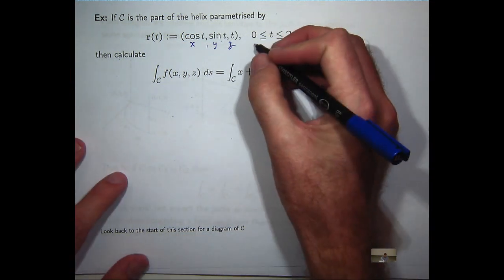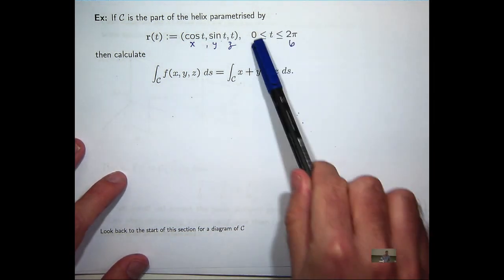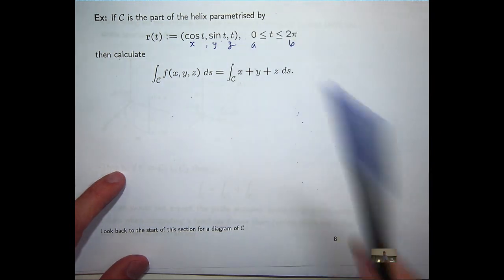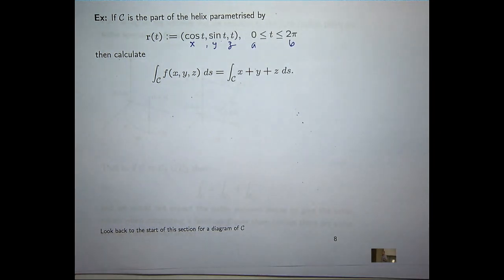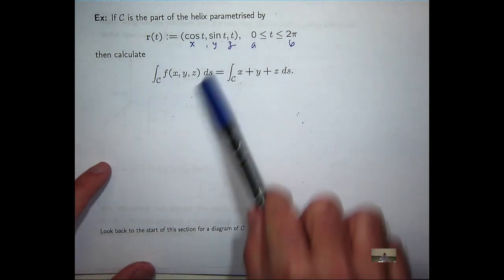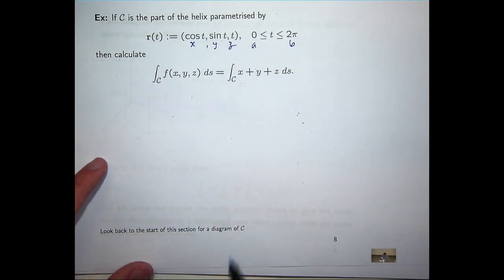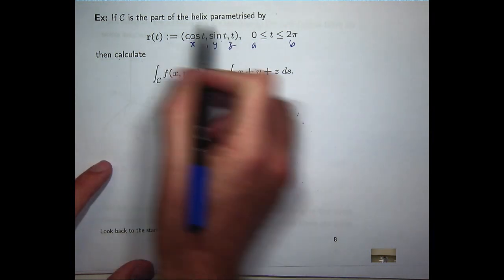My a and my b, my limits of integration, are going to be respectively 0 and 2π. So to calculate my line integral, first of all, I've got my parametrization.